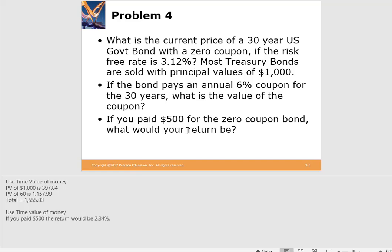If you were asked to pay $500 for just the zero-coupon bond, you wouldn't do it because it's only worth $397.84. Using the time value of money spreadsheet with a present value of negative $500, future value of $1,000, and 30 years, you'd find the yield to maturity is 2.34%. Since the risk-free rate is 3.12%, you would not pay $500 because you wouldn't be getting a high enough return.